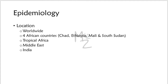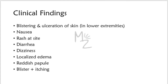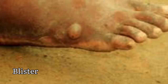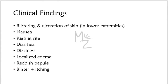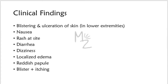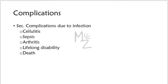Clinical findings depend on the pathogenesis: blistering and ulceration of skin especially in the lower extremities, a rash at the site, localized edema, a reddish papule that itches and burns. Some associated symptoms include nausea, diarrhea, and dizziness. Complications: the ulcer can be secondarily infected, leading to cellulitis, sepsis, arthritis, lifelong disabilities, and even death.